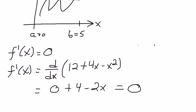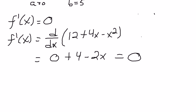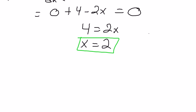Now we're going to let that equal 0 and we're going to see that we have 4 = 2x. That's going to give us x = 2. So that's going to be our critical point.